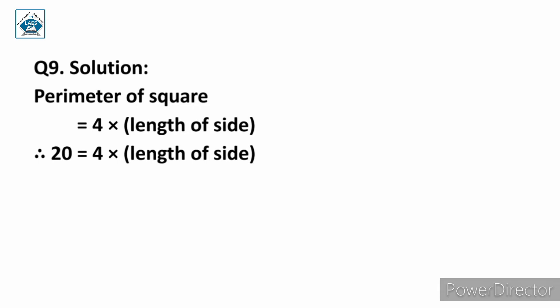We are given the perimeter which is 20 meter. So 20 equals 4 into length of one side. We need to find the length of the side, so we shift the 4 to the other side where it becomes a divisor.